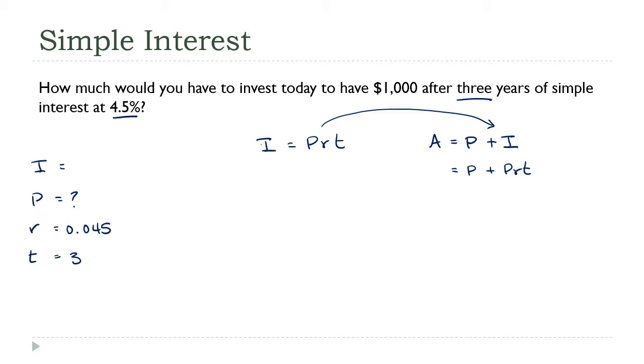And that's good, because what do I know? I know A. A is the total value in the future. That's $1,000. Now, look at this formula. I know everything in that formula except for A. I know, excuse me, I know A, I know R, I know T, and want to find P.